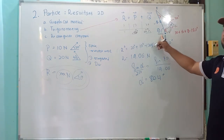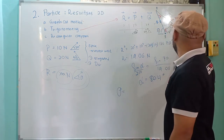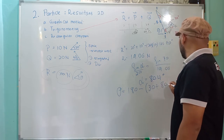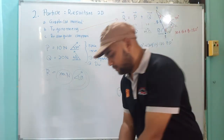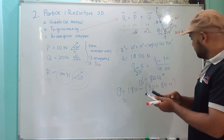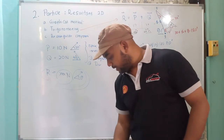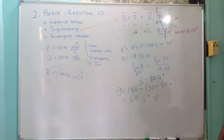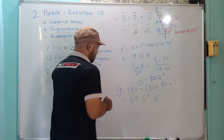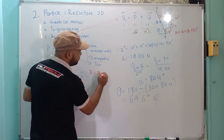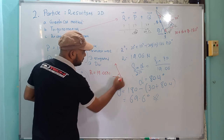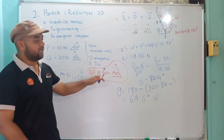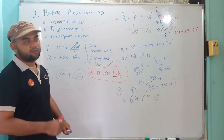Now you have alpha. You want theta — you have to subtract from everything: theta equals 180 minus 30 minus 80.4, so you have 69.63 degrees. This is your answer for direction. So your final answer: R equals 19.06 Newton at 69.63 degrees. You must write in terms of magnitude and also direction. If you don't write the final answer in this form, you will lose marks from your result.